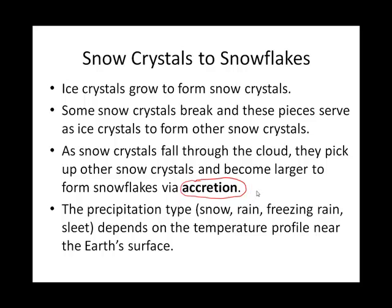We're going to talk more about the different types of precipitation that fall from the sky. Even though precipitation can start out as snow in the upper atmosphere, depending on the temperature profile as it reaches the ground, we'll either get rain, freezing rain, or sleet. We'll discuss how the atmosphere's temperature profile gives us those different scenarios.